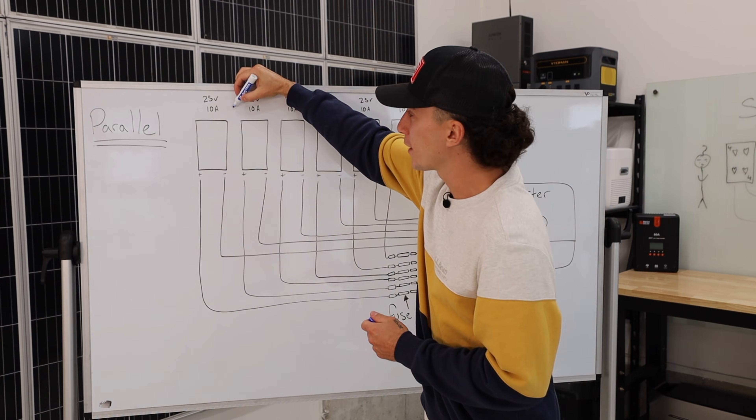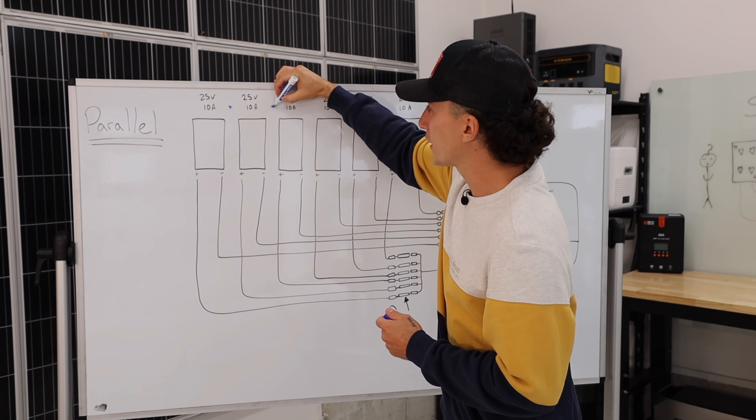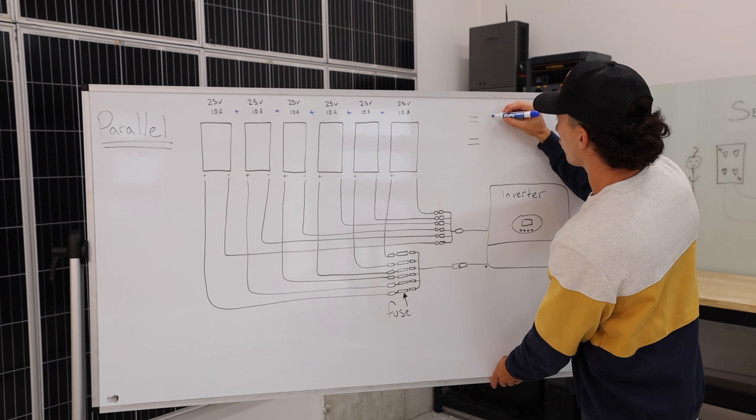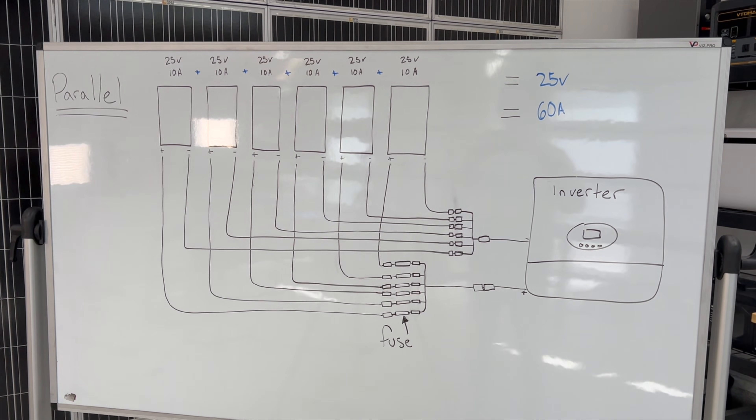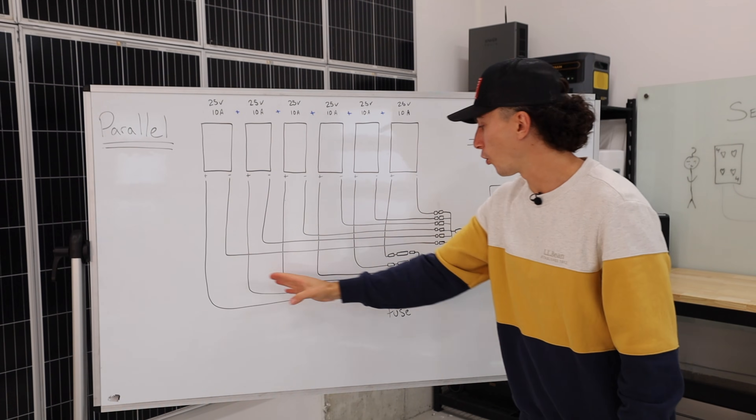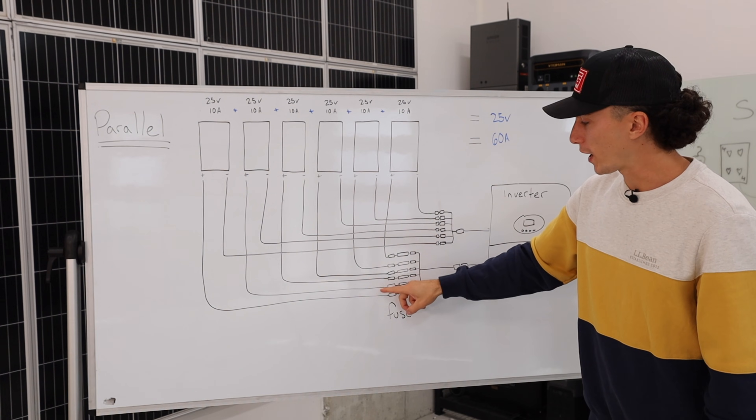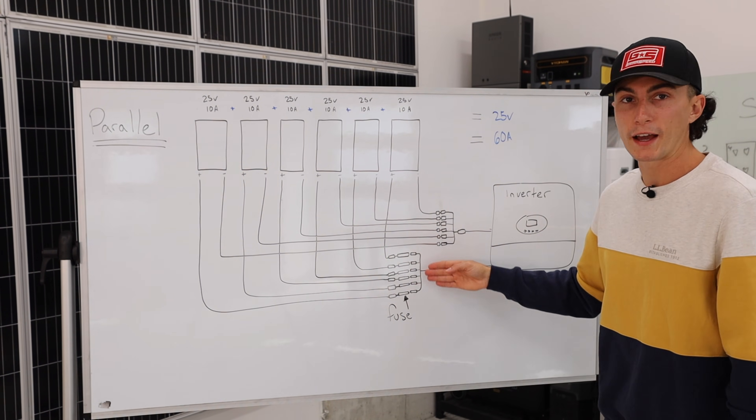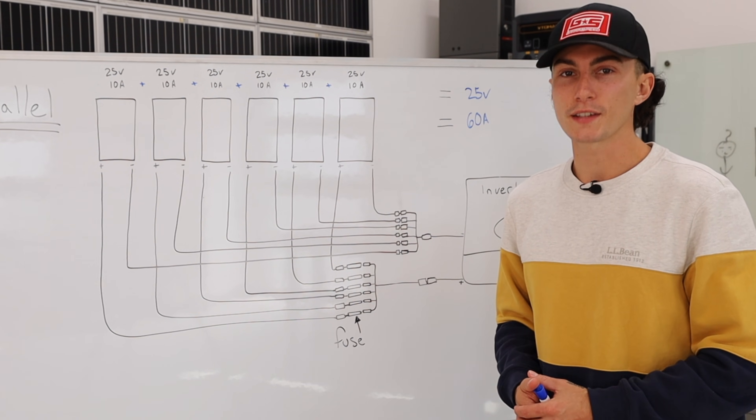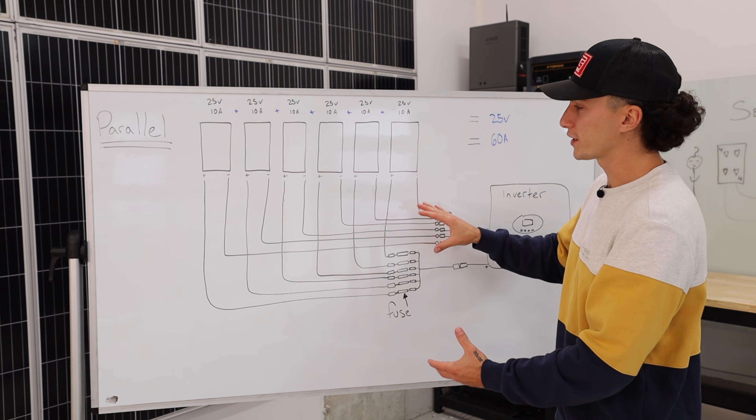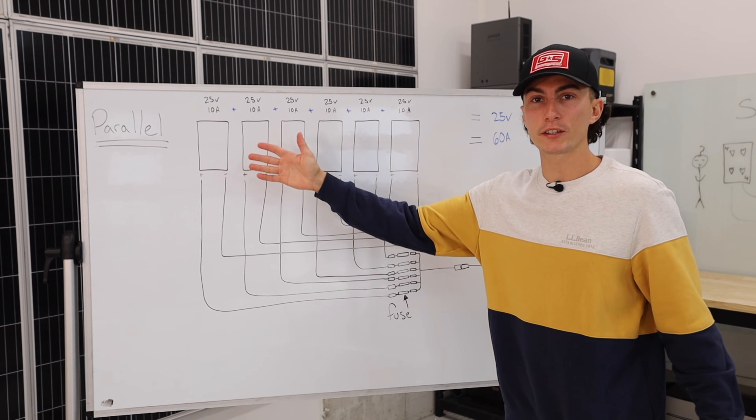If you were to add all this up for this array, you would actually only add the amps and the volts stay the same. You actually have a total of 25 volts for this array, but you would have 60 amps because in parallel, when all the wires come down here carrying 10 amps, they all combine—you now have 60 amps.